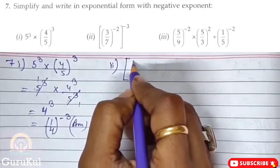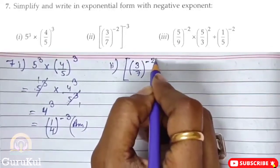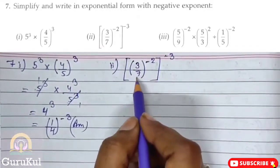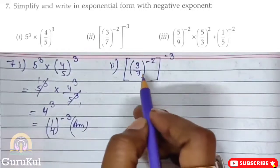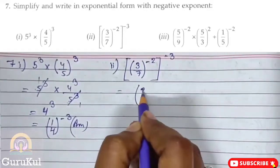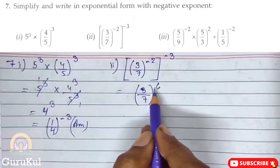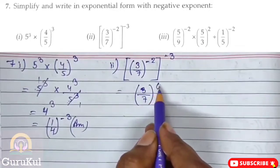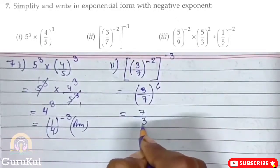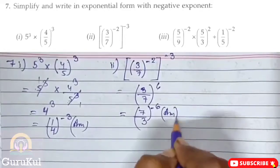The second part is: rectangular bracket (3/7) bracket close to the power minus 2, rectangular bracket close to the power minus 3. Here 3 and 7 are prime numbers, they cannot be reduced further. So we will directly multiply the powers.